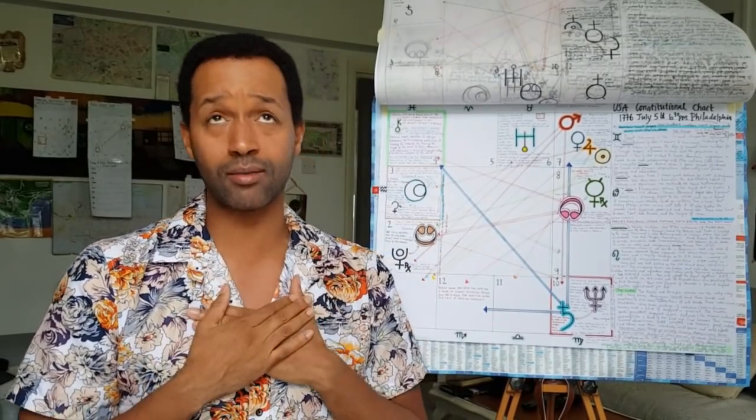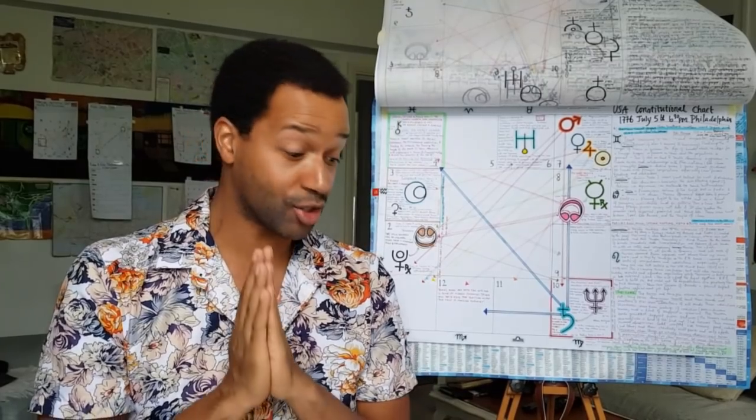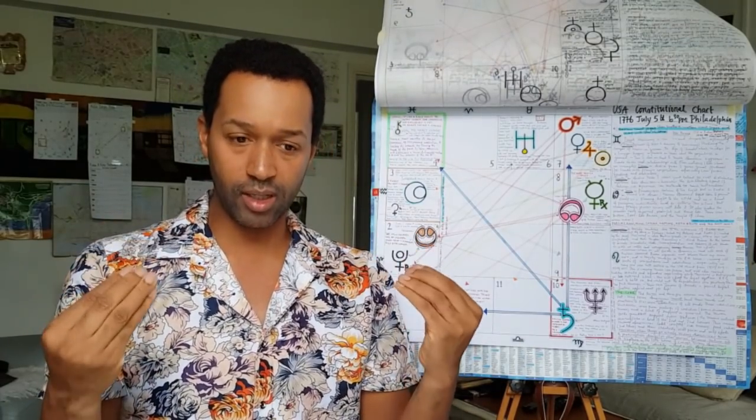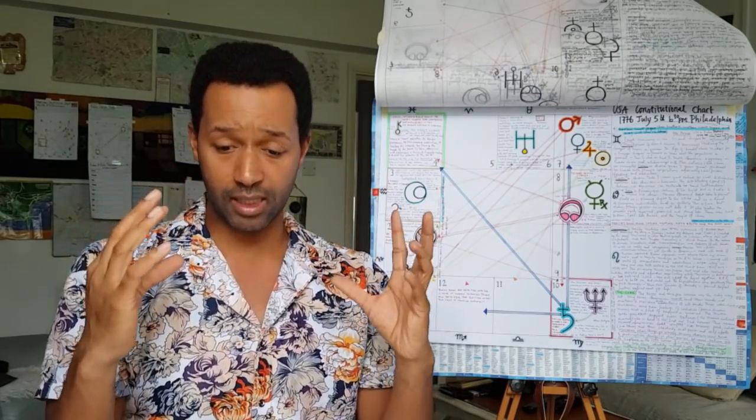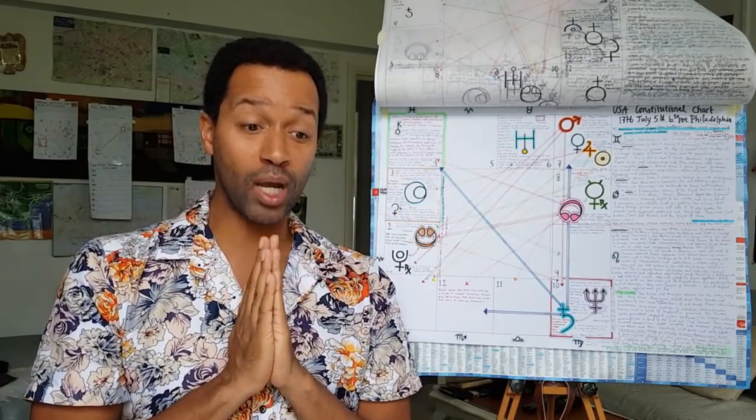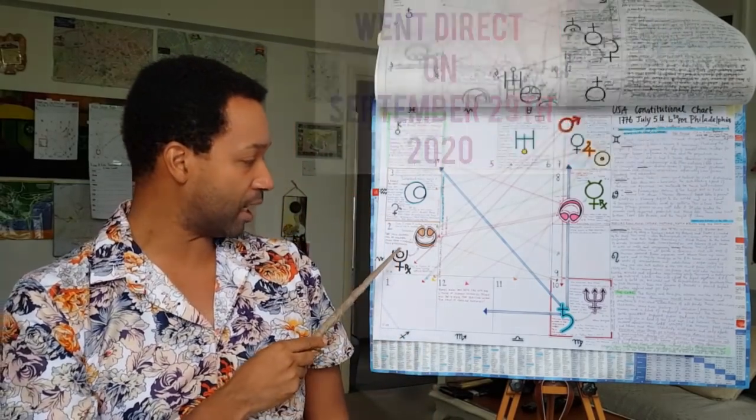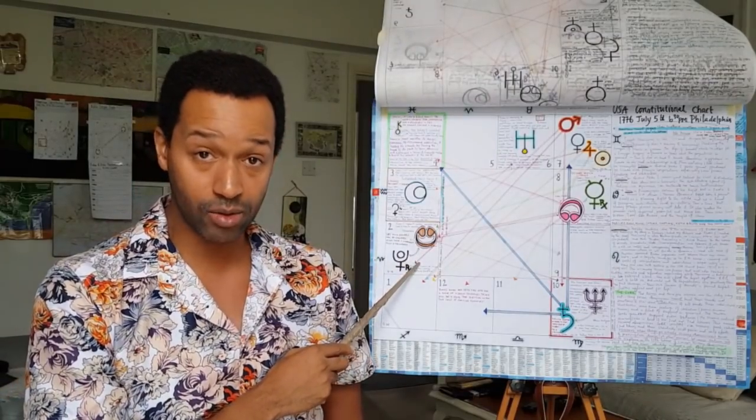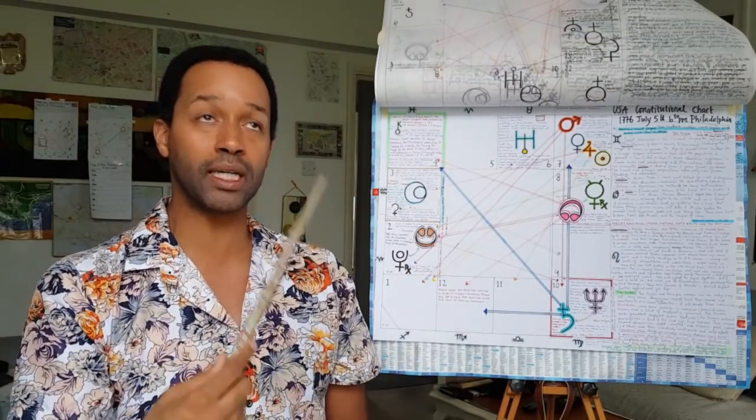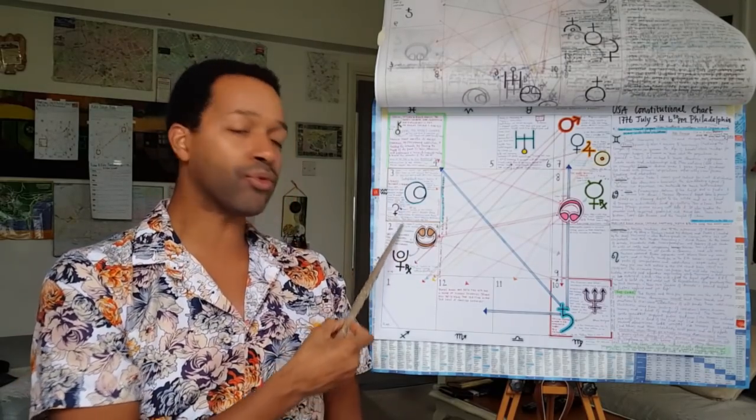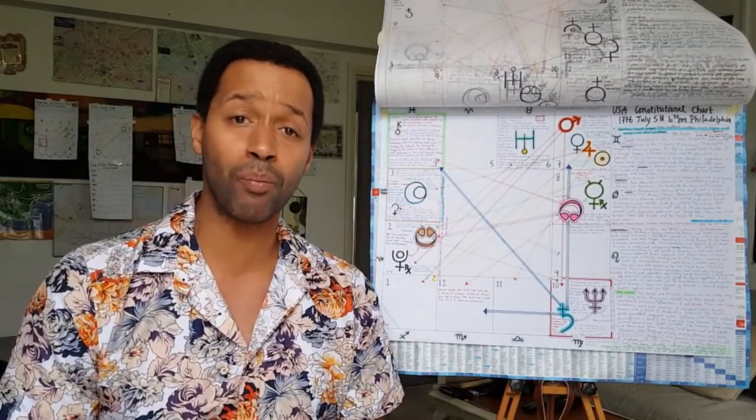There's something very important that happens with this US election with Mercury. Remember Mercury covers post, mail, communications, voting. Think of the postal service, which is called Hermes. Hermes is the other name for Mercury, Hermes is the god of communication, messenger of the gods. Mercury will go stationary direct on the day of the election, and that means Mercury stops. Mercury was going retrograde, going backwards. He slows up, stops, and then starts to go forward.